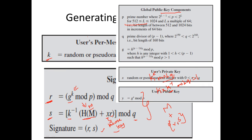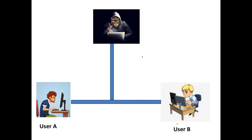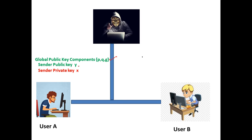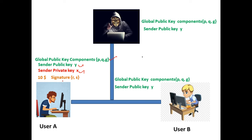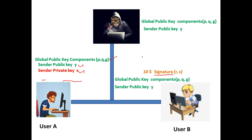Now let's see how the receiver validates the message. We have finished finding global public key components, public key, private key, and the computed signature. The signature plus message is sent to user B, and the third step is to verify whether the signature is valid.